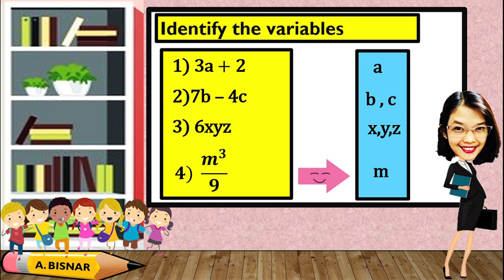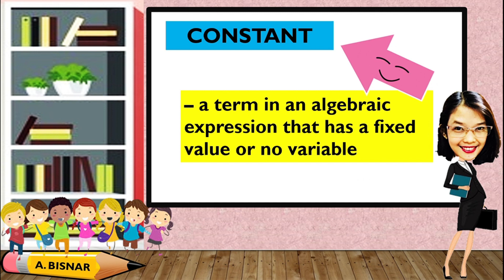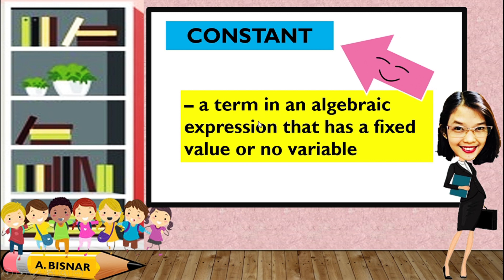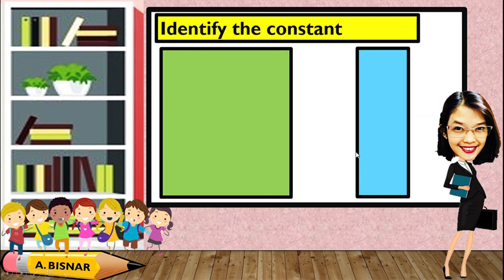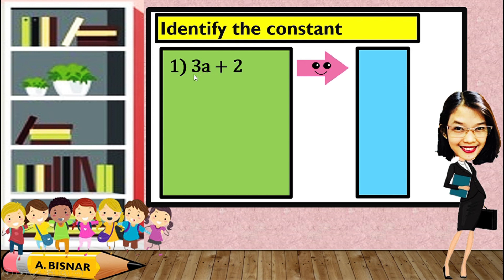Let us now identify what a constant is. A constant is a term in an algebraic expression that has a fixed value or no variable. From the given examples, we need to identify the constant. In 3a plus 2, the term 3a has an unknown value which means it is not fixed. Therefore, 2 is the constant.